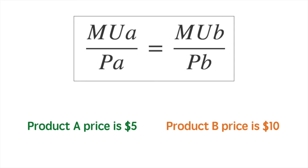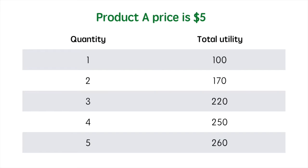We'll start with the table of quantity consumed and the associated total utility. I will use the word "utils" in this lesson, which means one unit of utility. In this table, we can see the total utility gain from the consumption of 1 to 5 units of Product A. Total utility is still rising, but as we learned from before, marginal utility is not. We next need to calculate the marginal utility for each unit of Product A.